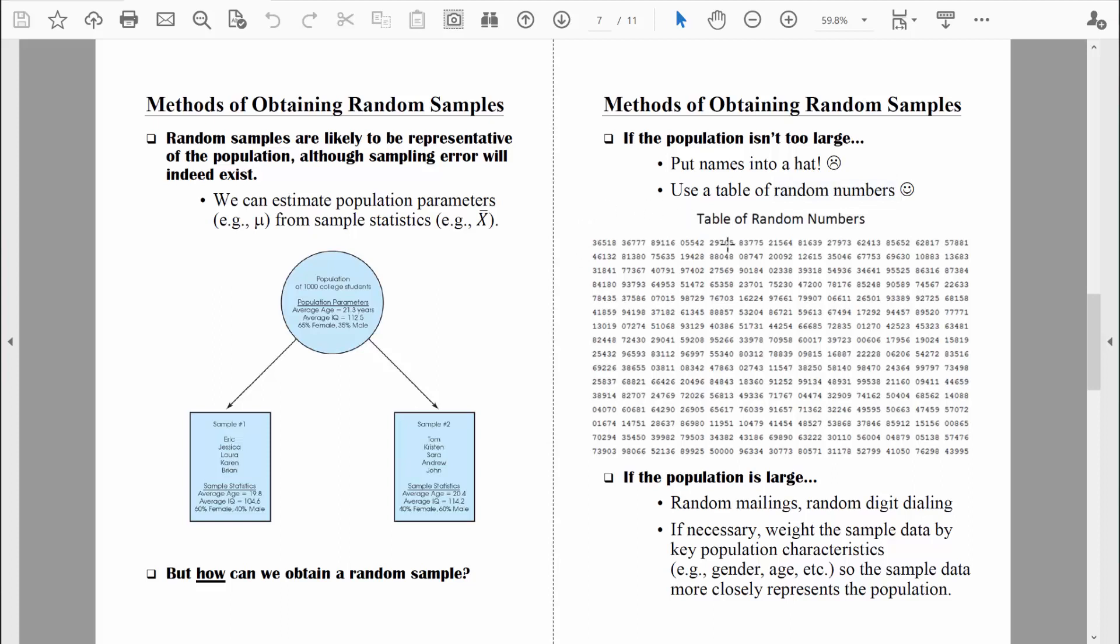After every one of those 35 students has been assigned a two digit number, I'm now going to find a random place to start in this table of random numbers. And let's say I start right there where you see that number two. Starting at that point, I'm going to see what's the next two digit number. And you can see the next two digit number is 27.